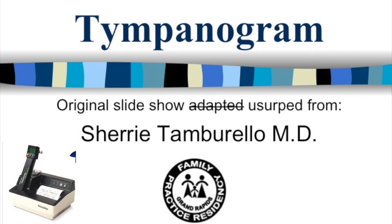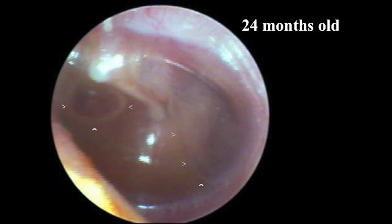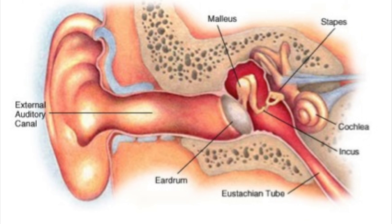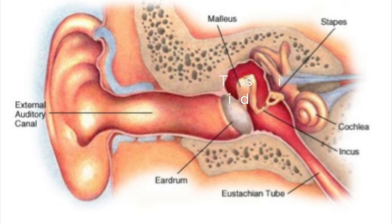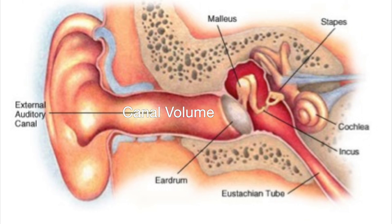The tympanogram can be a great tool when you're suspicious about tympanic membrane or middle ear abnormalities. The eardrum, like any membrane, will vibrate best when there's equal pressure on both sides. By sending pressure waves into the ear canal and measuring the amount of vibrations of the tympanic membrane, the tympanogram can: 1. measure compliance or mobility of the tympanic membrane, 2. measure the pressure within the middle ear, or 3. measure the volume of the external auditory canal.